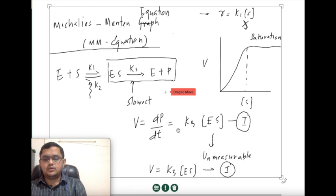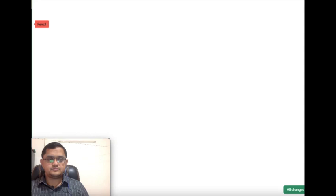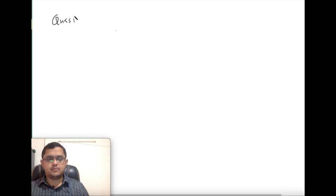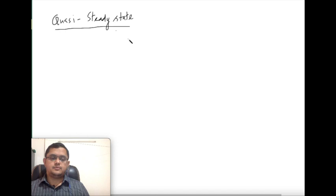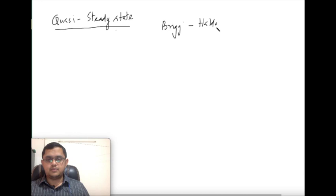To replace ES, there are two approaches, but today we are going to see the quasi-steady state approach. This is not the original approach developed by Michaelis and Menten — those scientists used an equilibrium approach. Later, two other scientists called Briggs and Haldane modified it and introduced this quasi-steady state approach to develop the same equation. The end equation is the same, but this way is easier to explain in certain examples.